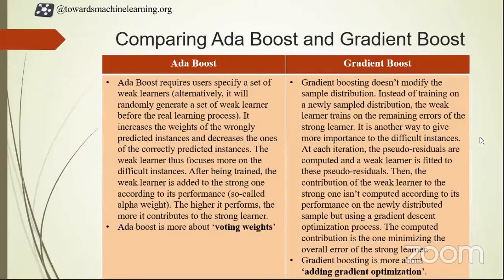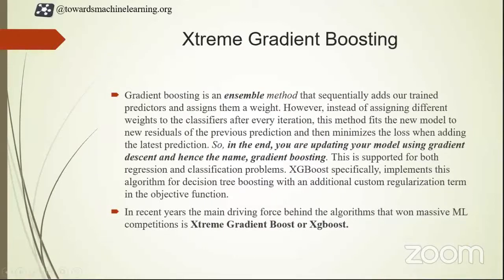Now I guess no one is having any doubt, so let's move on to the next boosting algorithm — that is XGBoost, also known as Extreme Gradient Boosting. XGBoost was introduced because Gradient Boost computes the output at a very slow rate, as we have seen in the disadvantages of Gradient Boosting. This is the main reason why Extreme Gradient Boosting was invented — because it computes the output at a very slow rate due to sequential analysis of the dataset, taking a longer time, large amount of memory, and so on.